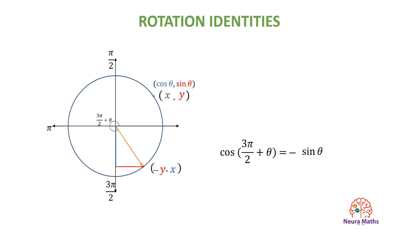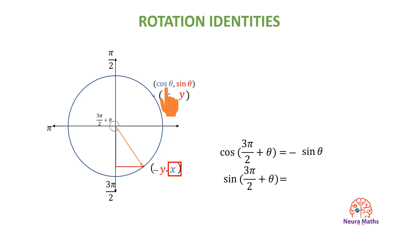The y-coordinate of the image is the x-coordinate of the original point. So, the sine of the angle 3 pi over 2 plus theta is equal to x, which is the cosine of the original theta.